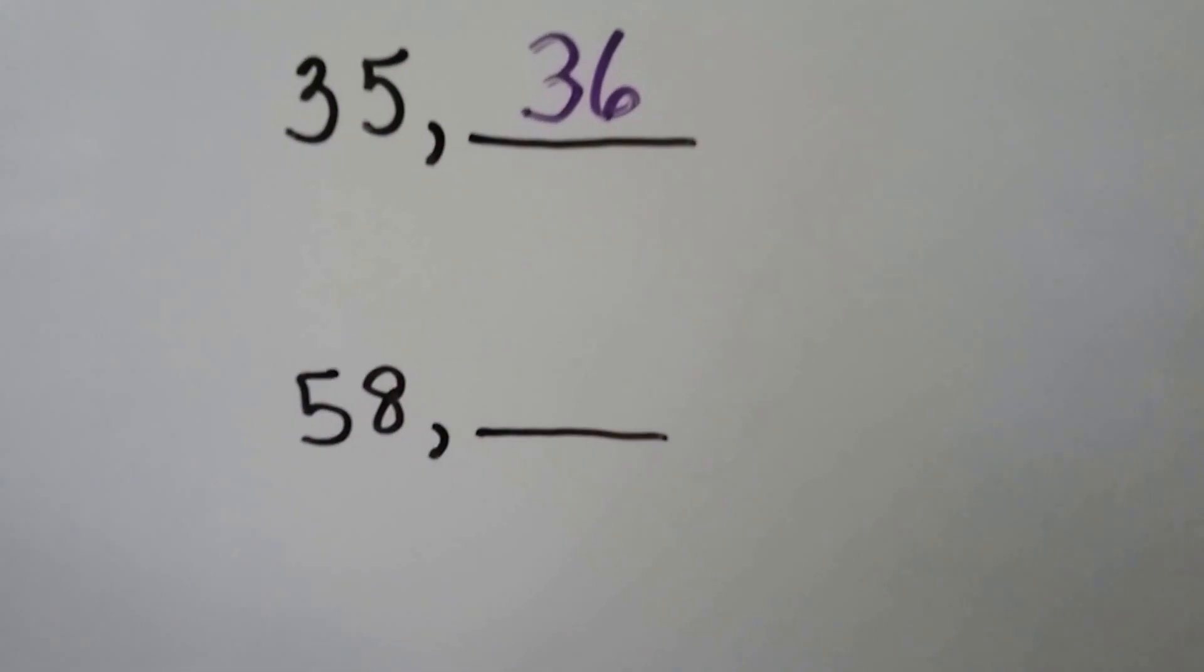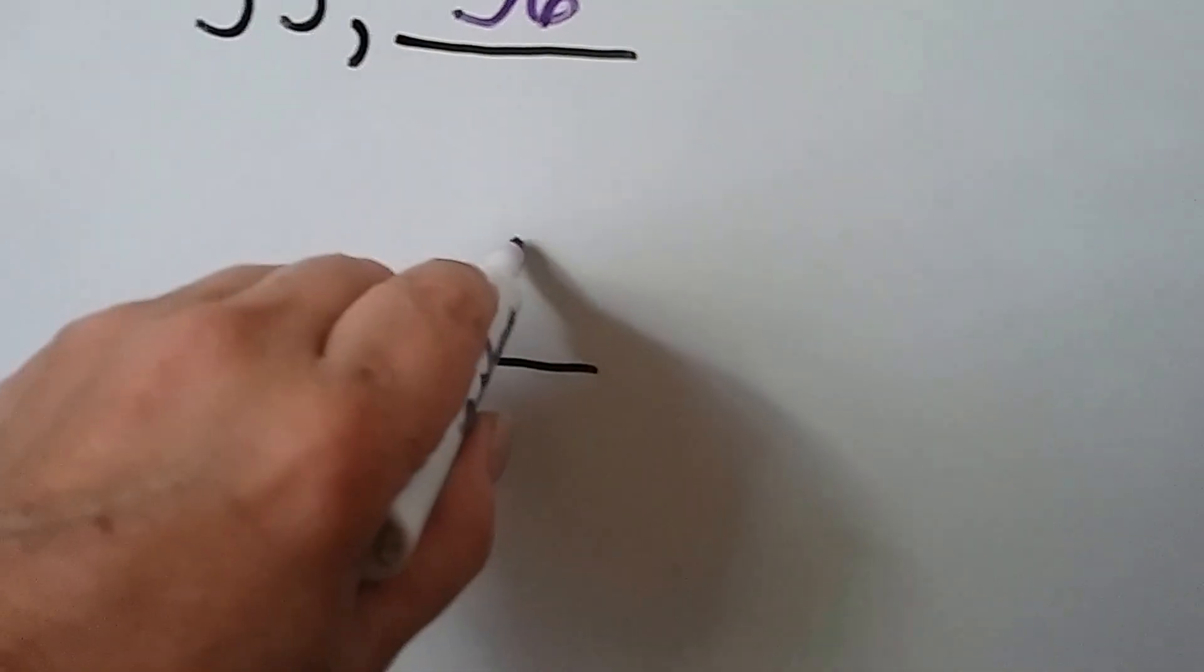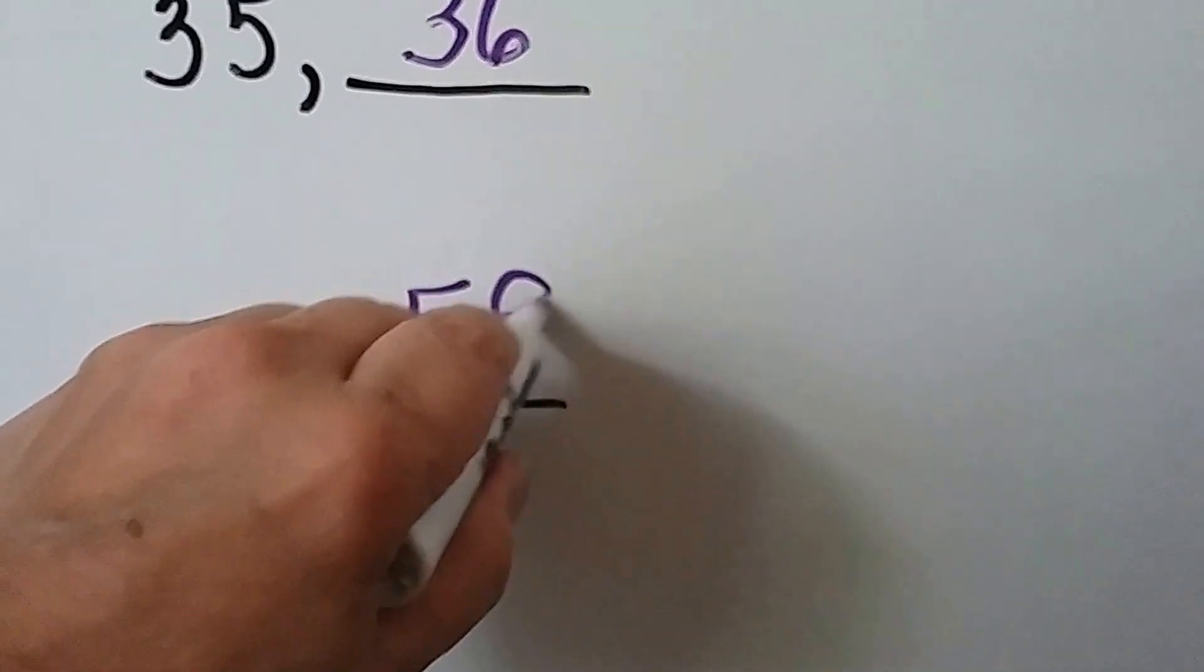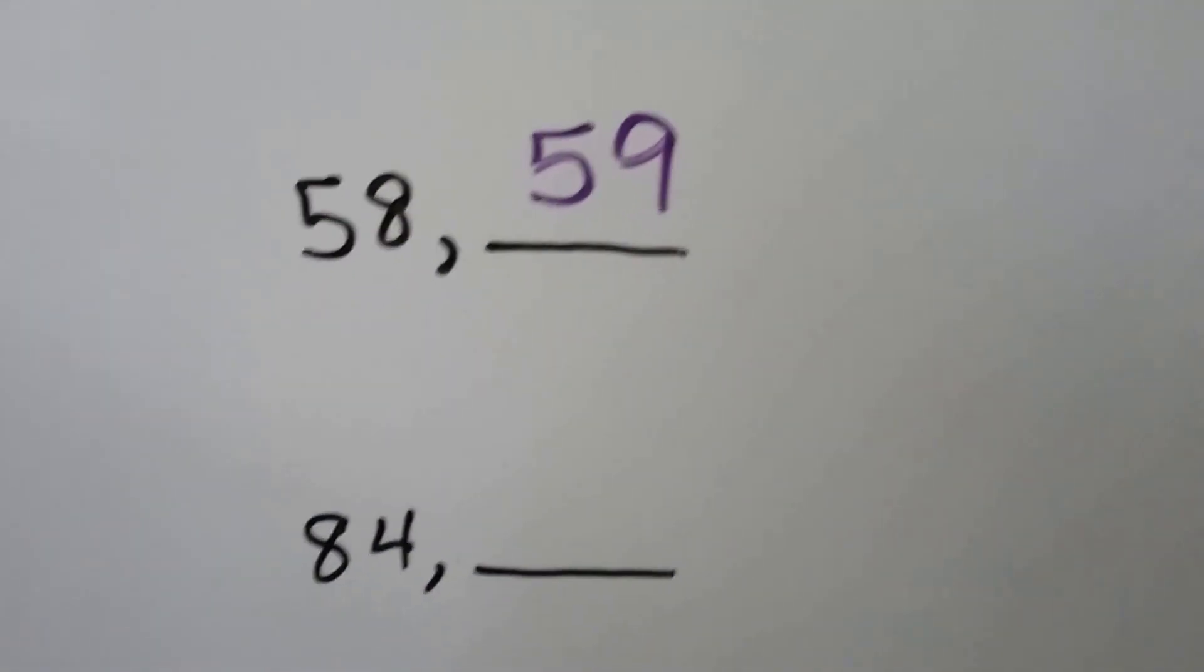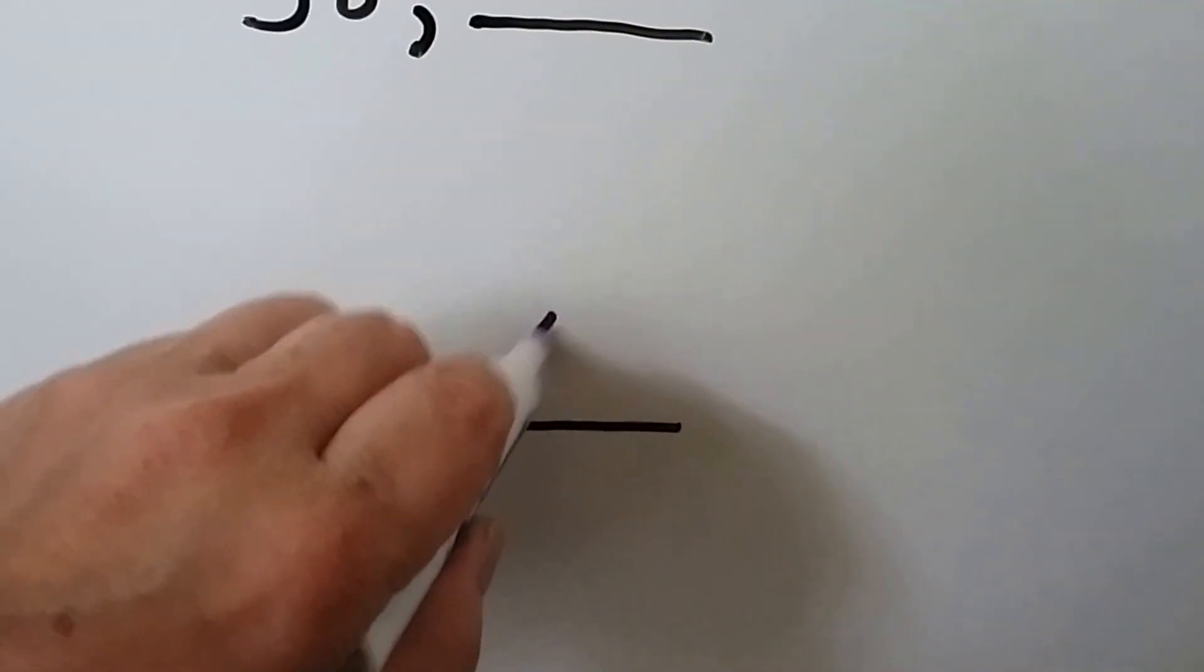What number comes after 58? 58 and 59, right? That's one more. What number comes after 84? One more would be 85.